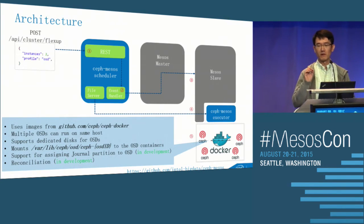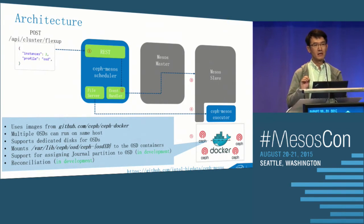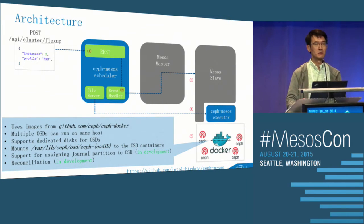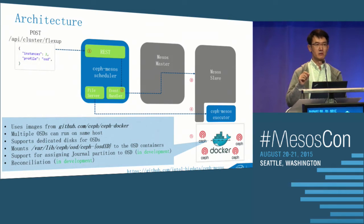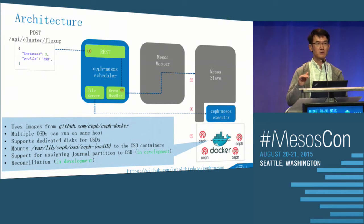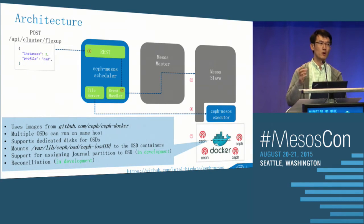If any instance of the cluster fails due to some process crashing or some other issue, the Mesos scheduler will maintain a status about the health of each node. So as long as the underlying storage is still available — the data on the disk is still available — Mesos will try to recover that node on that exact same host.